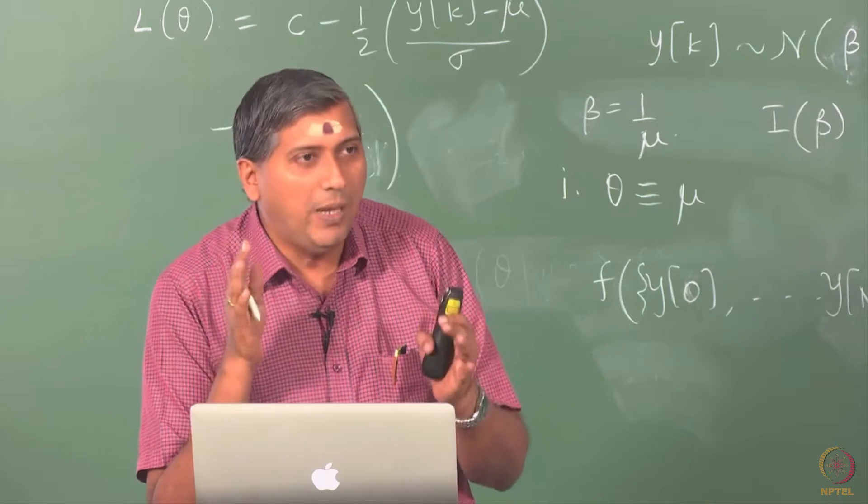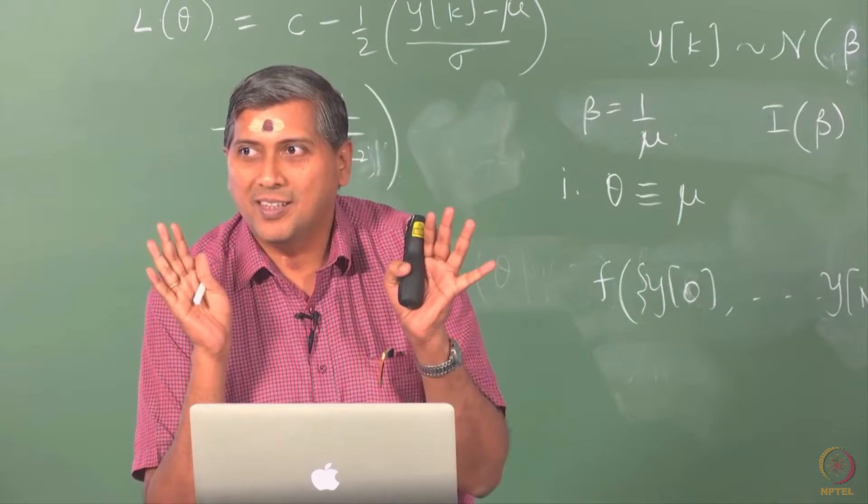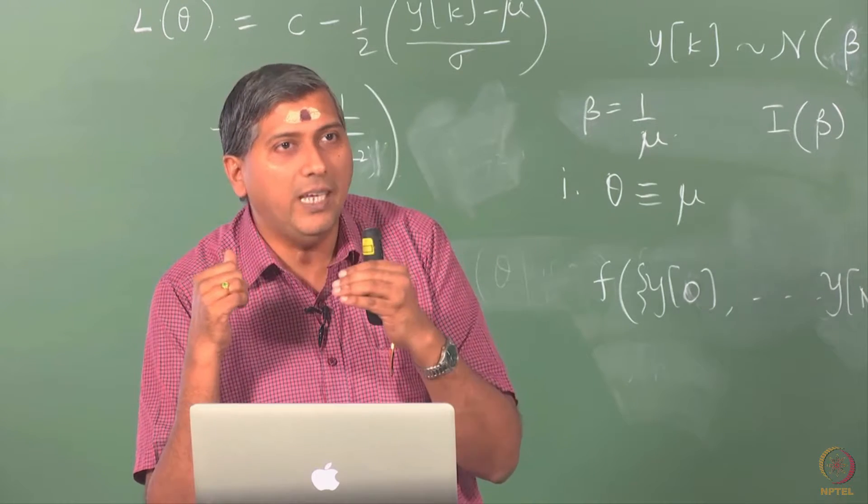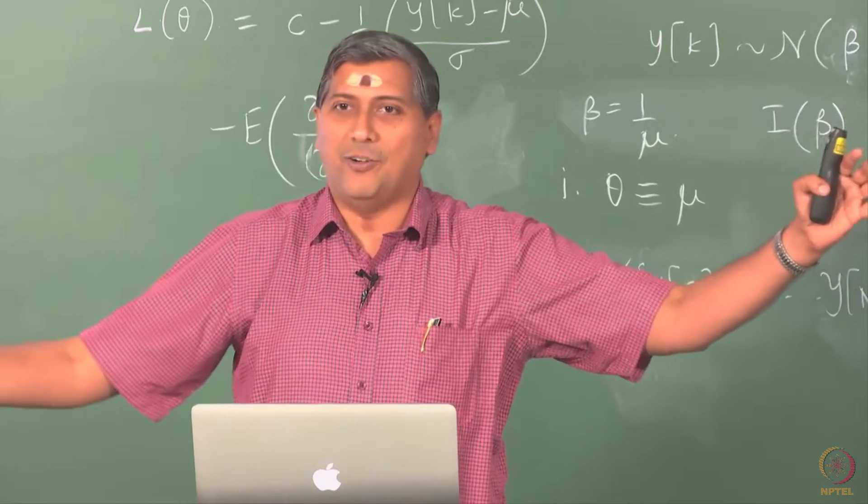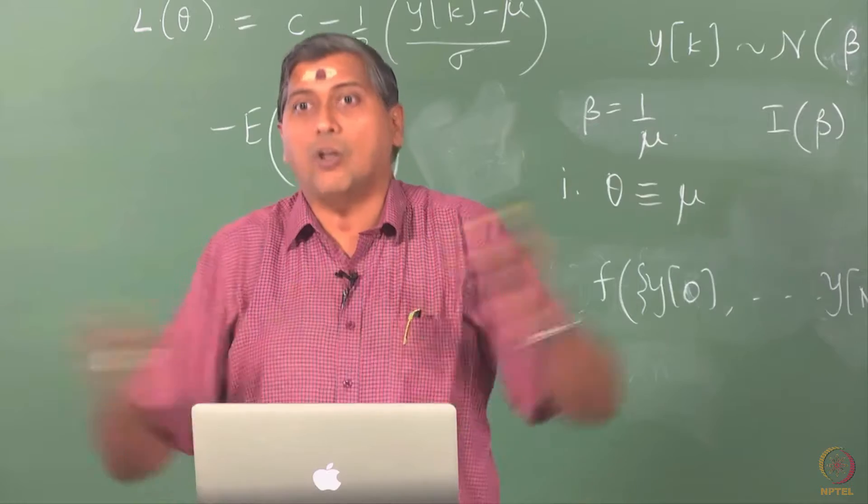The error in any estimate is simply θ̂ minus θ₀. That will never be 0. Here this is a standard error and this standard error is the error averaged in some sense across data records and this can be driven to 0.